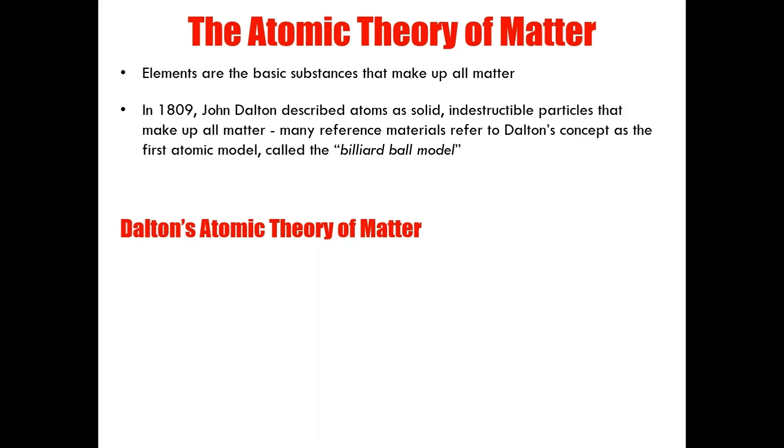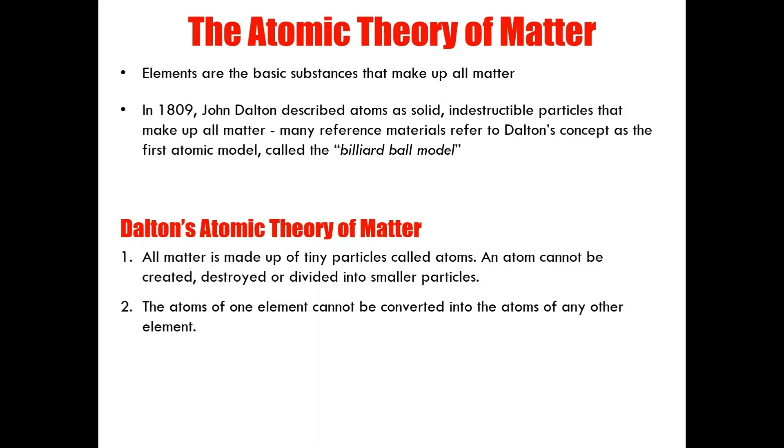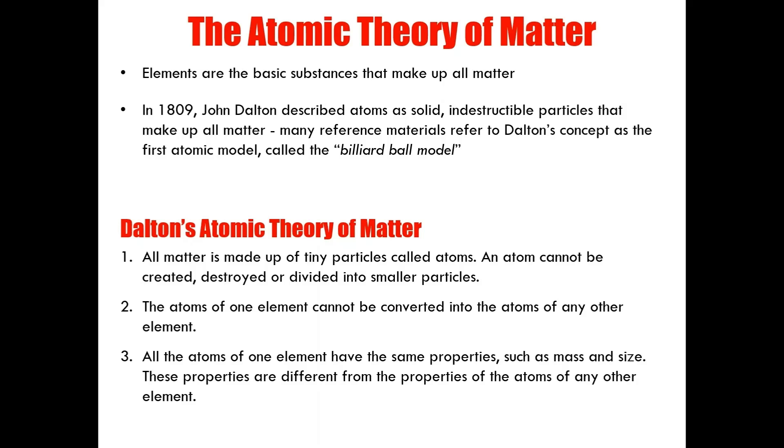His theory became known as Dalton's atomic theory of matter. The theory is composed of four main ideas. First, all matter is made up of tiny particles called atoms. An atom cannot be created, destroyed, or divided into smaller particles. Second, the atoms of one element cannot be converted into the atoms of any other element. Third, all the atoms of one element have the same properties, such as mass and size. These properties are different from the properties of the atoms of any other element. And fourth, atoms of different elements combine in specific proportions to form compounds.